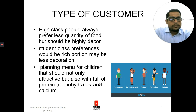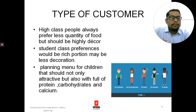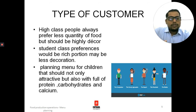Next is type of customer. Higher class people always prefer less quantity of food but it should be highly decorated. The middle class would prefer a richer portion but may be of less decor and should be of less price. When planning a menu for children, it should not only be attractive but also full of protein, carbohydrates, and calcium.